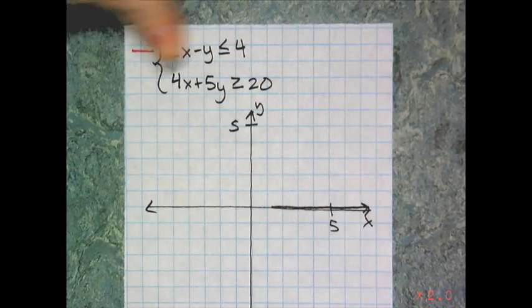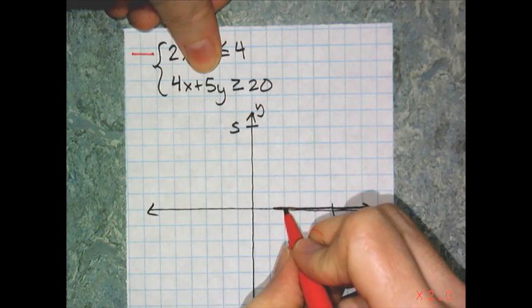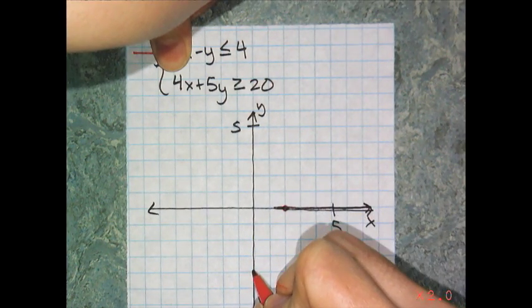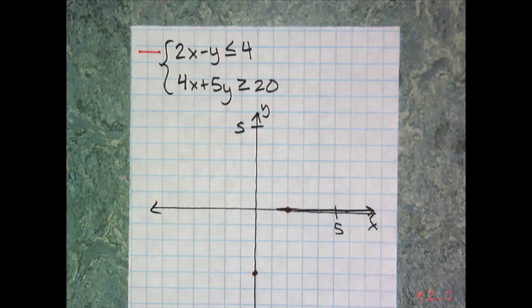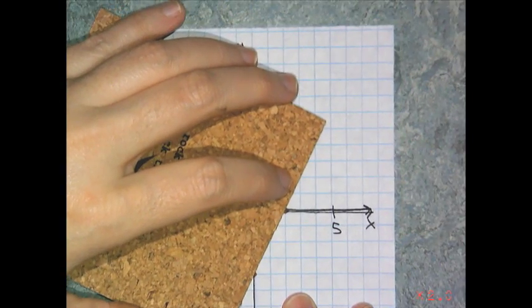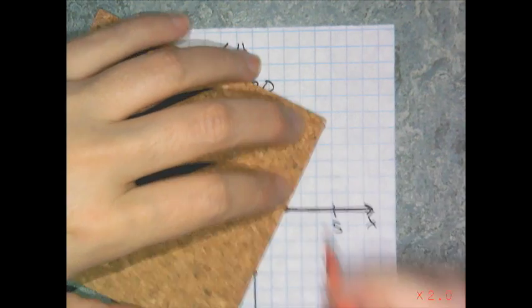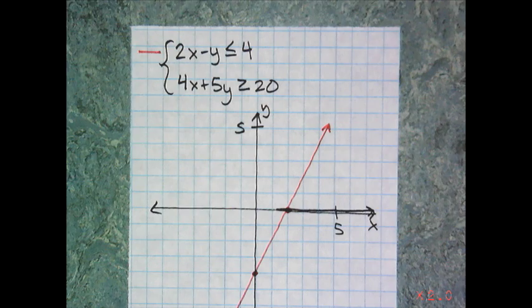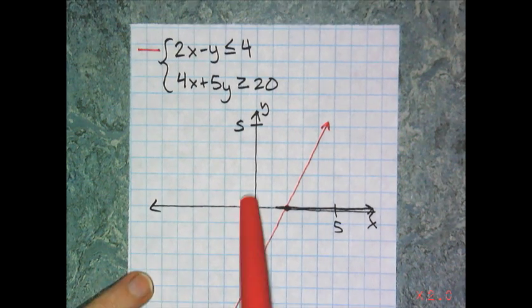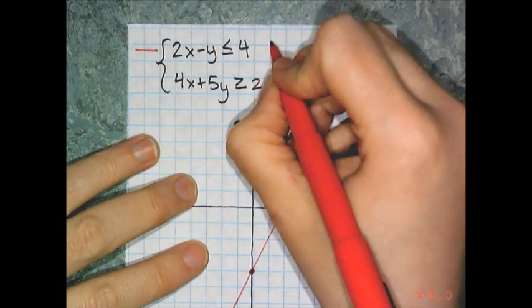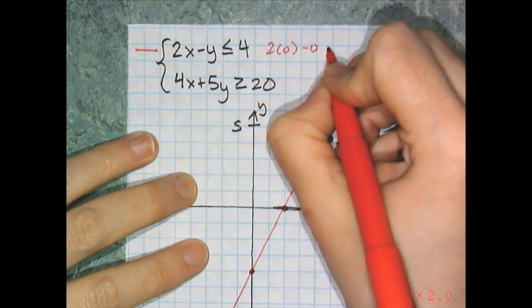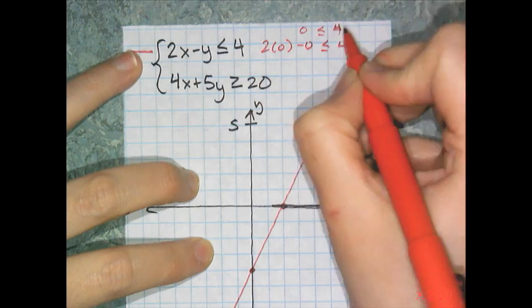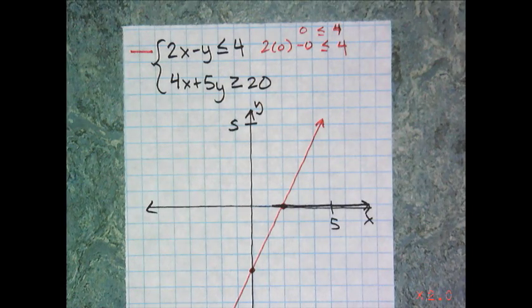The x intercept is where x is 2, and the y intercept is where y is negative 4. So I have my two points, and it's a solid line, so I'm going to connect them with the solid line. And now I'm going to decide if I need to shade above or below that line. And so I'm going to test the point 0, 0, because it's not on the boundary. So 2 times 0 minus 0, is that less than or equal to 4, is 0 less than or equal to 4. And that is true. So in this case, I'm going to be shading above.